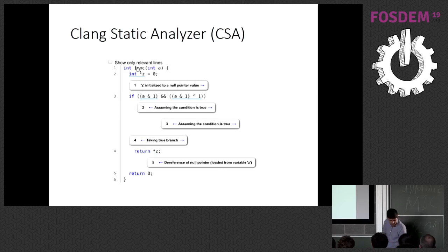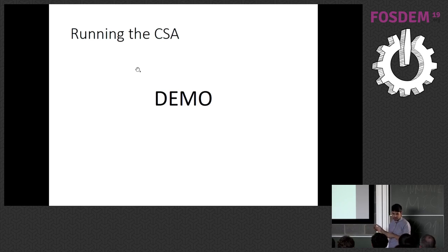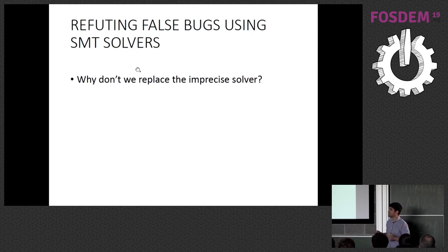This illustrates the wrong assumption the analyzer made. I was going to do a demo but my laptop didn't work, so we'll try again by the end. So we have imprecise analysis in the Clang Static Analyzer — why don't we replace it with a more precise solver?